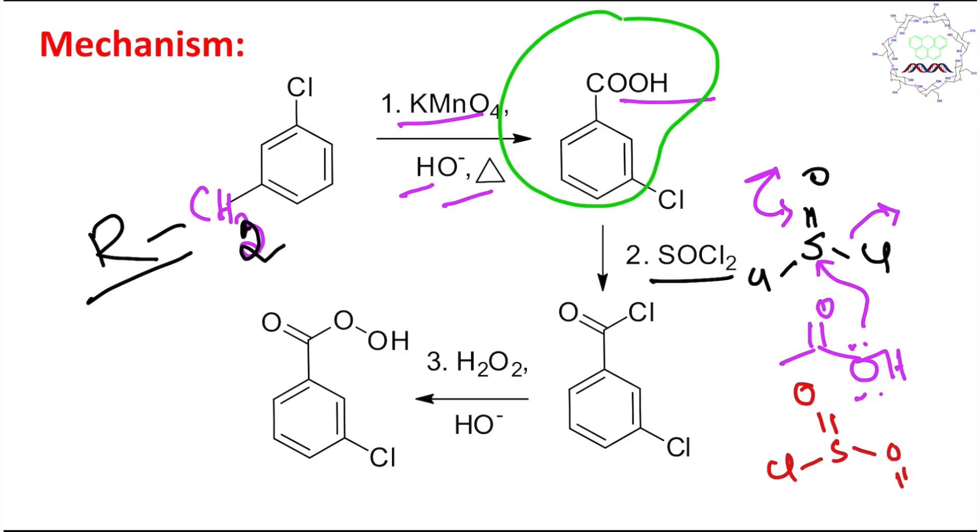This chloride attacks this carbonyl group and through acyl nucleophilic substitution type reaction it produces this acid chloride.